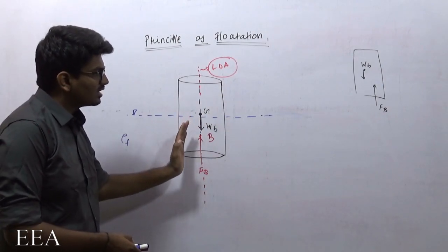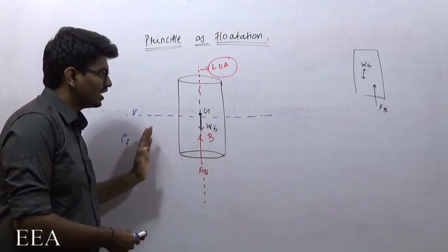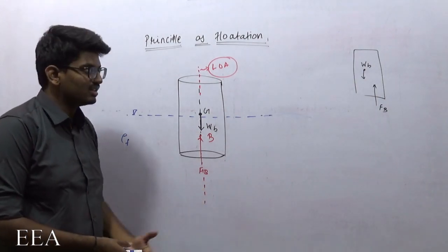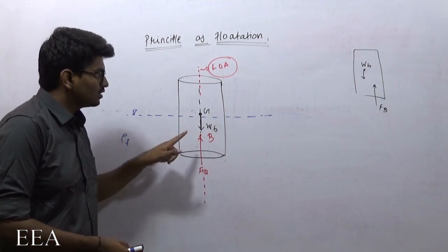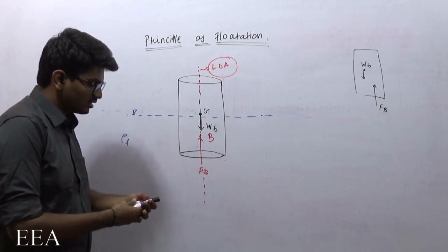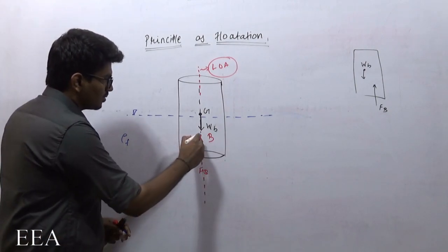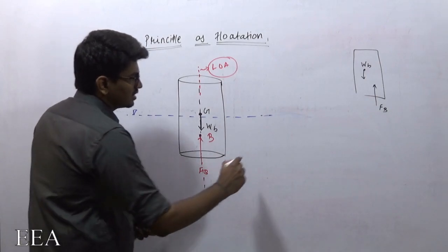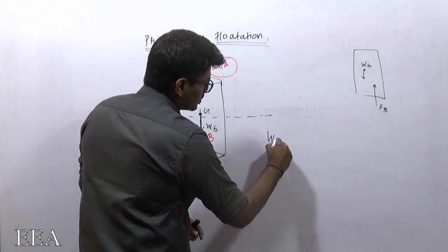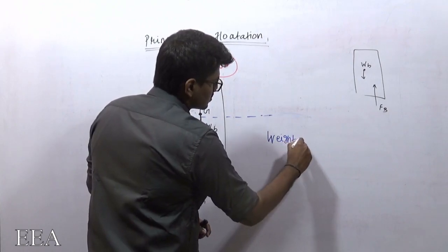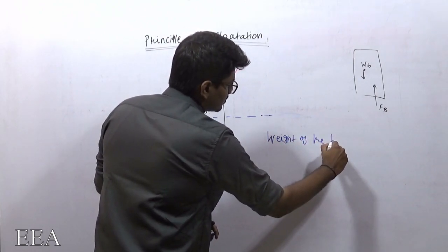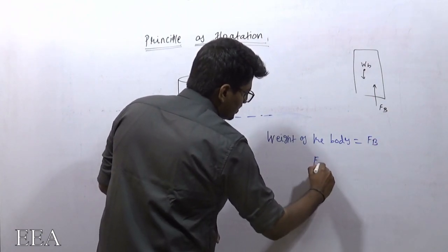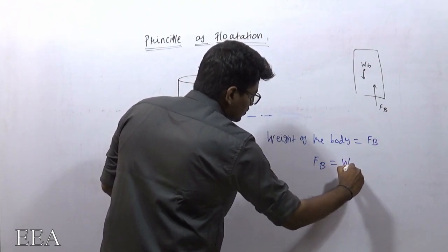Regarding that — if the buoyancy force shifts to the right side or the left side, what will happen? Those things we will discuss further in the equilibrium condition. So if the body has to float and there should not be any external moment, the first condition is: weight of the body should be equal to buoyancy force, that is F_b = W_b.